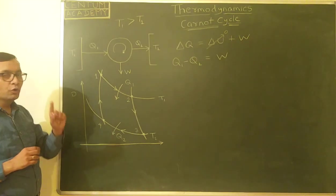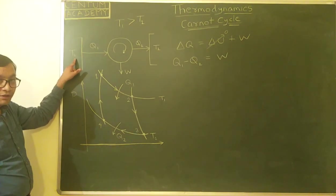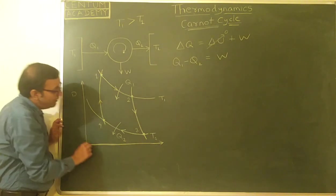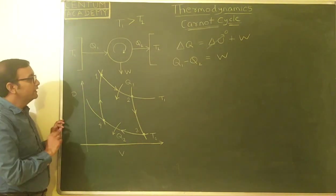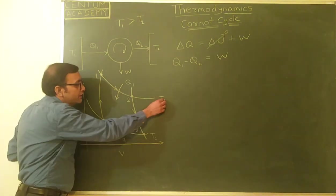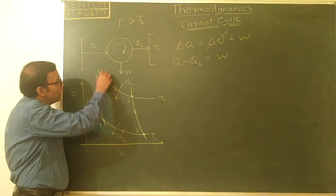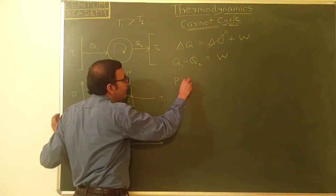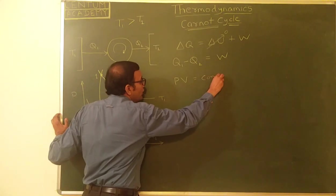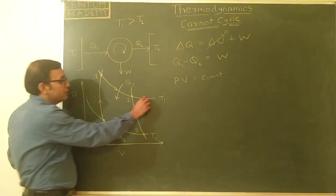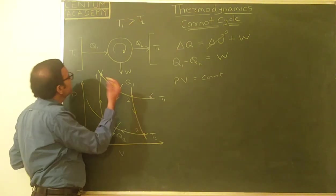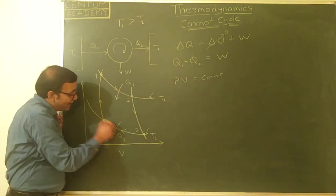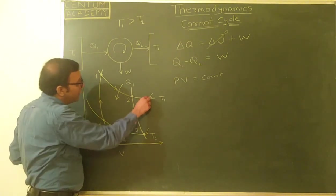Heat is absorbed at constant temperature T1 and heat is released at constant temperature T2. If we plot this cycle on a PV graph, there will be two processes at constant temperature. A constant temperature curve in a PV graph satisfies PV = constant. So we have two isotherms: a higher isotherm at T1 and a lower isotherm at T2.